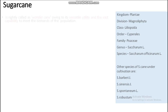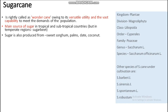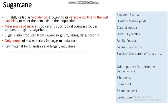Sugarcane is rightly called the 'owner cane' owing to its style, utility, and vast capability to meet the demand of population. It is the main source of sugar in tropical and subtropical countries, while in temperate regions sugar is produced from sugar beet. Sugar is also produced from sweet sorghum, palm, and coconut. It is the only source of raw material for sugar manufacture, and for the kandari and jaggery industry.